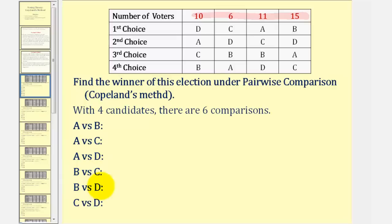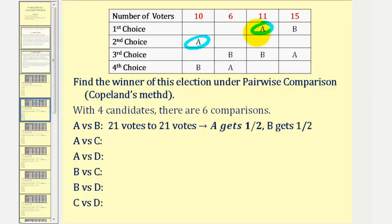To begin, we'll compare A and B. To make this easier to do, we'll delete C and D from the table. Notice A is preferred here and here, so A would have twenty-one votes. And B is preferred here and here — B also receives twenty-one votes. Since it's a tie, A and B both get half a point.